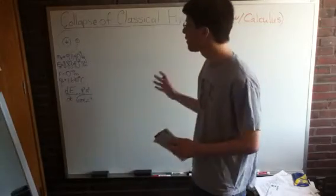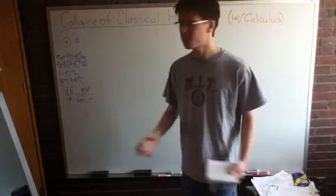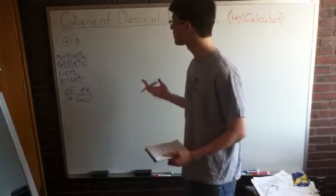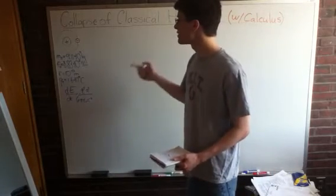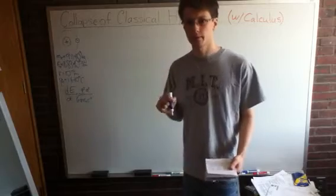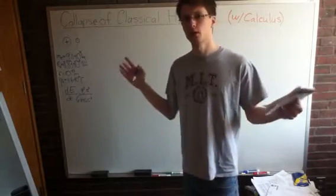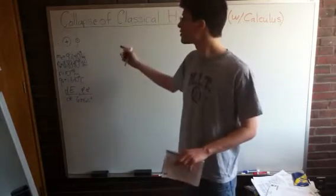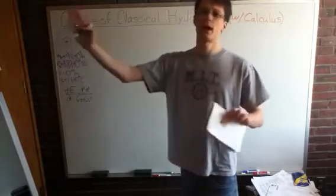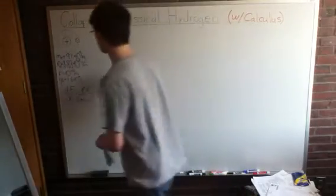So, if you want to know how long it takes total for the atom to collapse, then it would make sense to first look at how much energy does the electron lose every orbit. Because if we know how much energy it has total, which we can calculate, how much energy it loses per orbit, then we can figure out how long will it take to fall in.